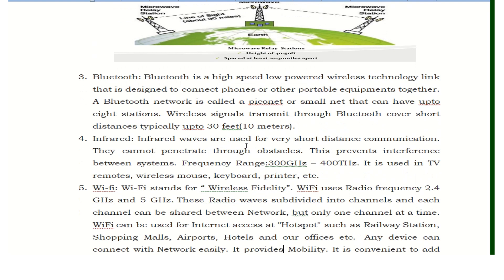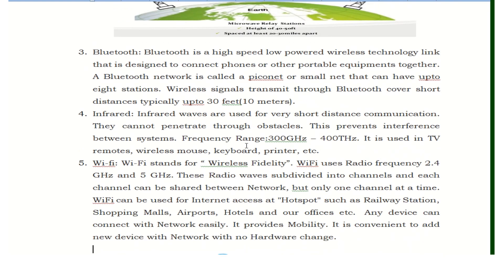The third type is Bluetooth. Bluetooth is a high-speed, low-powered wireless technology link designed to connect phones and other portable equipment together. A Bluetooth network is called a Piconet or Smallnet, and it can have up to 8 stations. The wireless signals transmitted through Bluetooth cover a short distance, typically up to 30 feet or 10 meters.